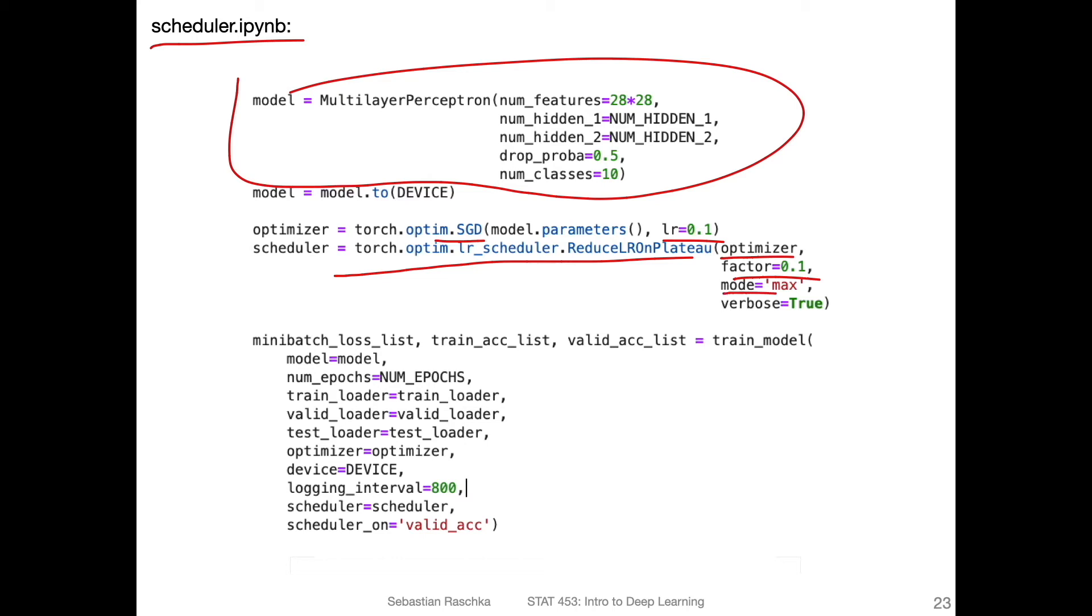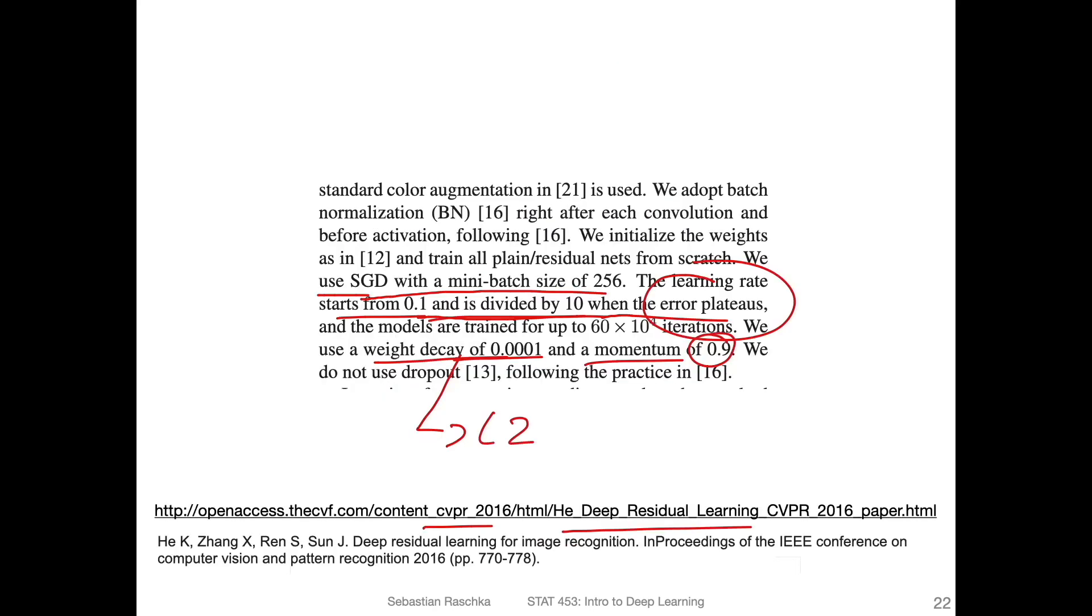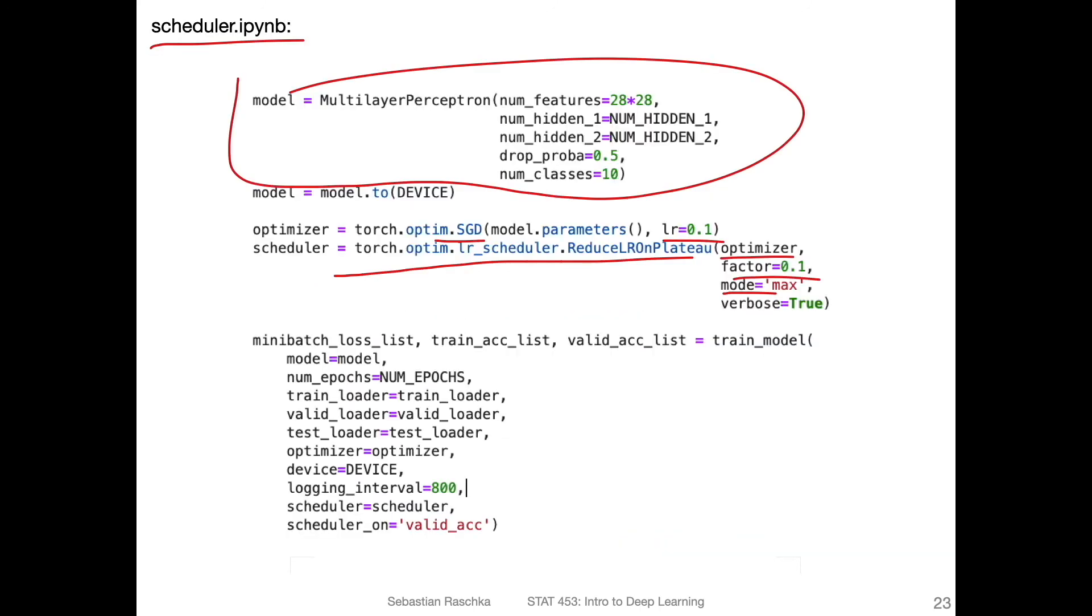Then there's a mode. So the mode, it really depends on where or what you apply this to. So you can apply this to anything you like during training. So here they say error, it's not quite clear what they mean by error. It could be either the loss or the classification error. Personally, I tried different things. And I find it usually works best if I do this on the error on the validation set or accuracy on the validation set.